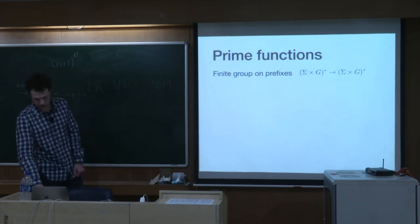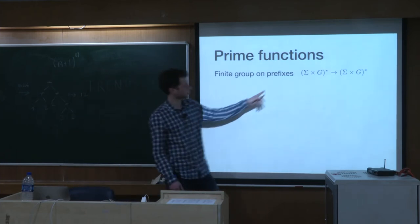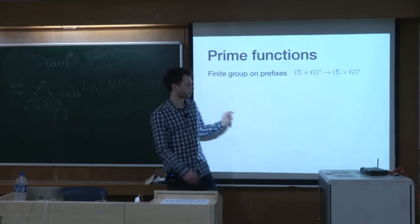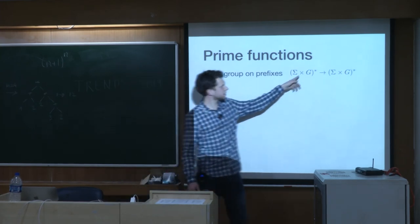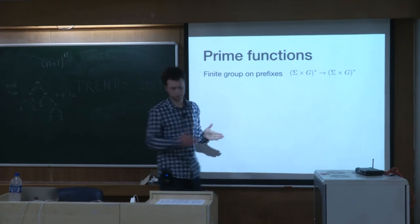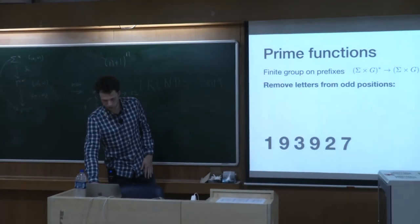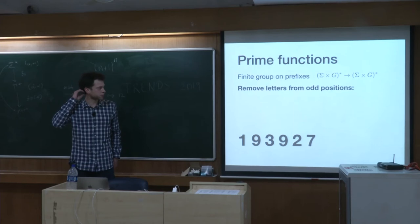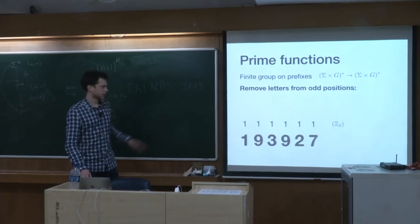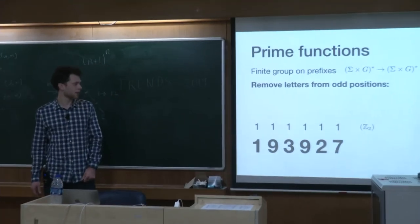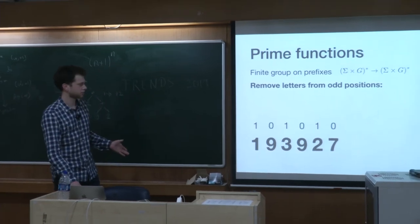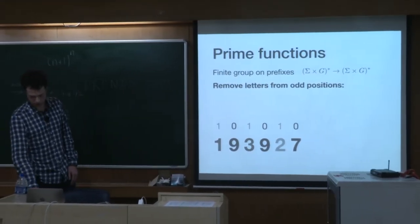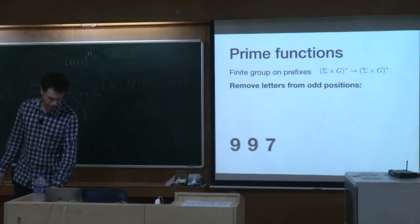Now, finite group on prefixes. We have any kind of alphabet that will stay unchanged, but on the other coordinate we have a group. For every prefix, we want to change the value to the group product on that prefix. For example, we might use it to do the function 'remove letters from odd positions.' We add a 'one,' which is a member of the Z2 group, and then apply this function, so it will change the flags to one, zero, one, zero, one, zero. Now we can just filter out all the zeros and get our output.